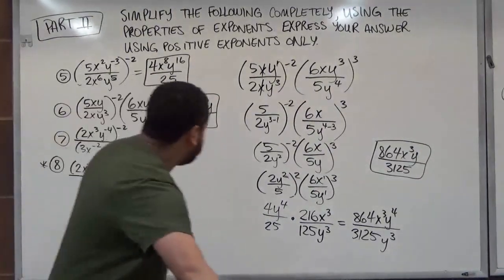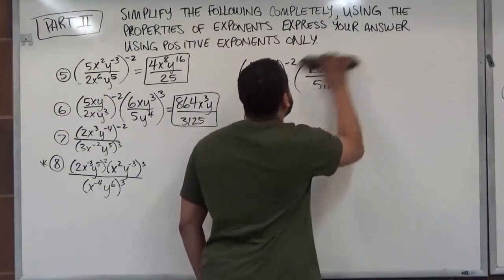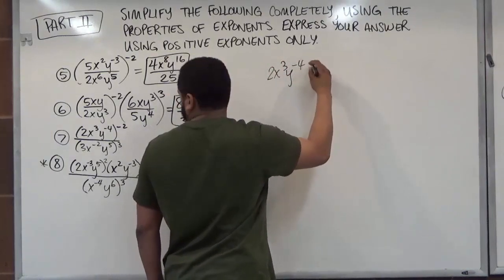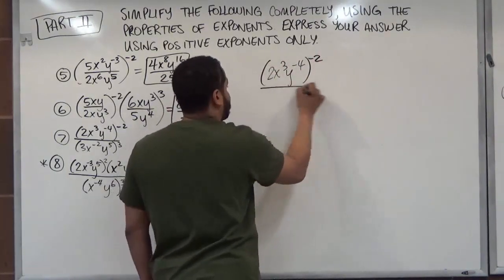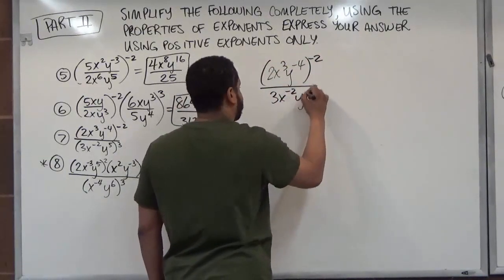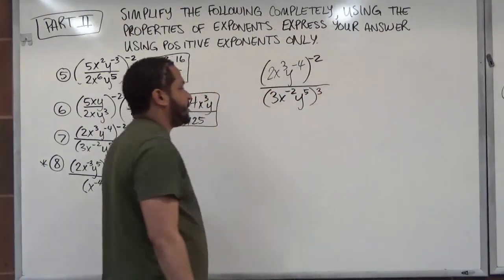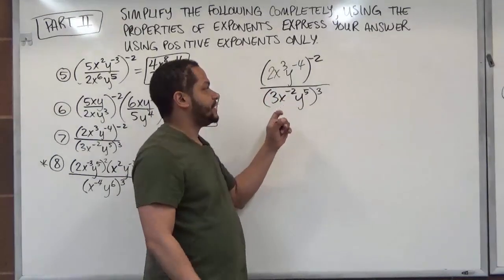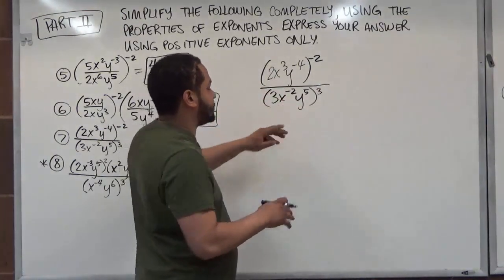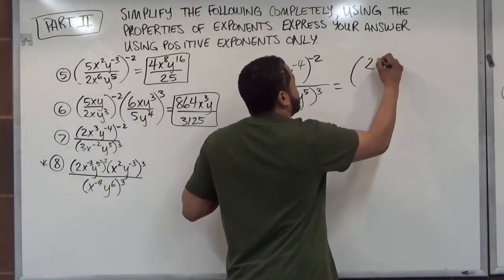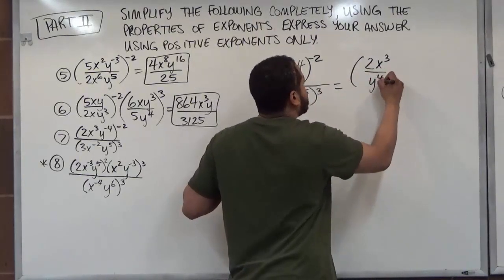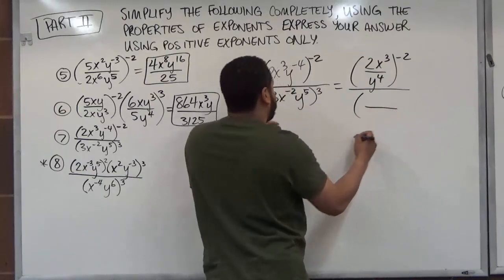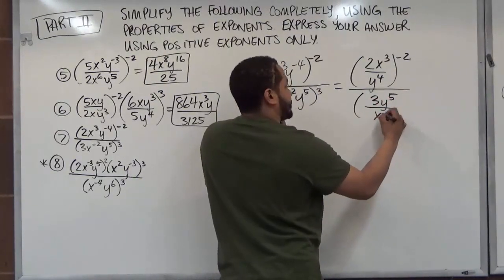Let's move on to problem number 7. We have 2x cubed, y to the negative fourth to the power of negative 2, and then 3x to the negative second, y to the fifth, to the third power. Usually we begin with what's inside, but for the practicality of this problem I'm going to convert it to a different form — because it's a division and these are going to become fractions. So let's rewrite: 2x to the third with y going to the denominator as y to the fourth, to the negative second — divided by 3y to the fifth over x to the second, to the third power.